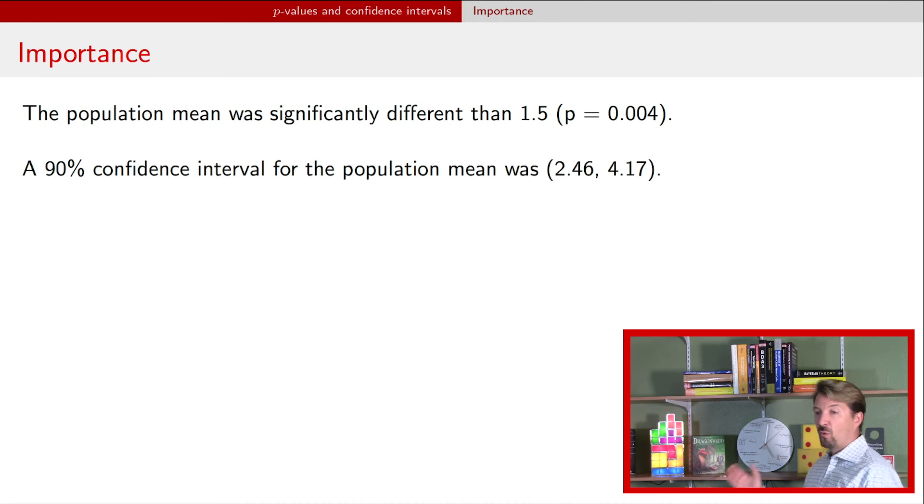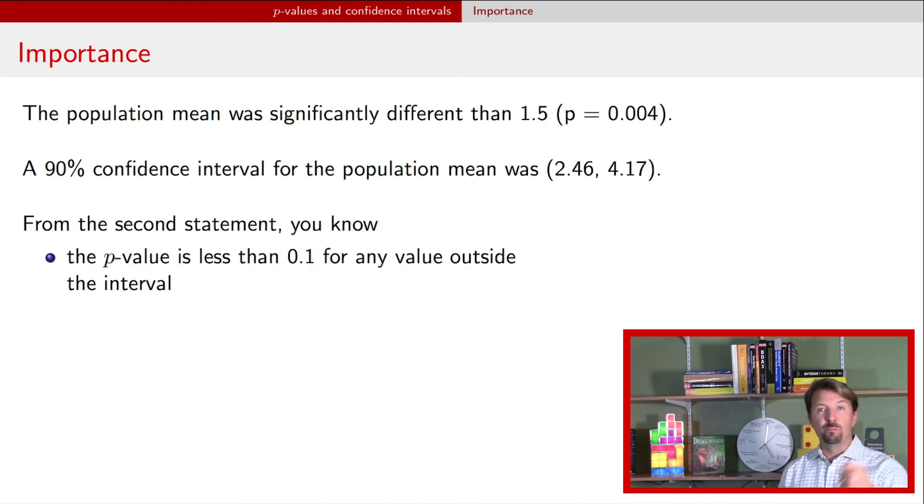What is a much more informative sentence is this one. A 90% confidence interval for the population mean was 2.46 to 4.17. You can see that the lengths of those two statements are almost identical. And in fact, the second one's a little bit shorter. So if we're thinking about compactly communicating statistical results, I think the second sentence is much more informative. For one, it tells me, because of this correspondence between p-values and confidence intervals, it tells me right away that the p-value is less than 0.1 for any value of the null hypothesis outside that interval. I got 0.1 because I have a 90% interval. Confidence level is 0.9. Significance level, therefore, is 0.1. That's the first thing it tells me, which is, the first statement up there told me that, told me maybe a little bit more that I might want to know for a particular value of 1.5.